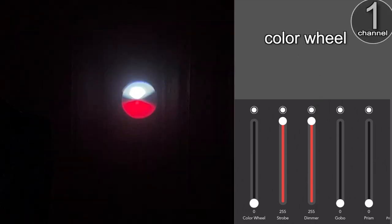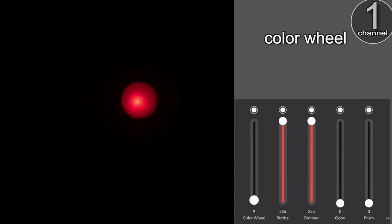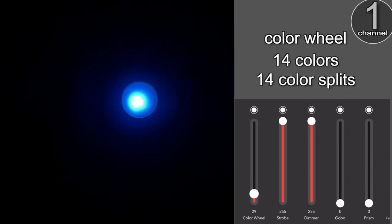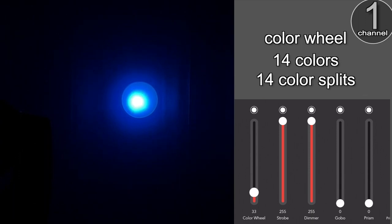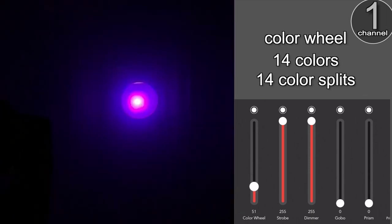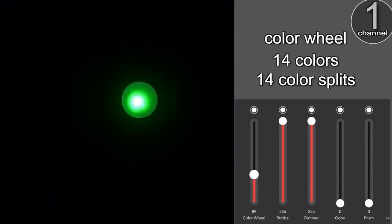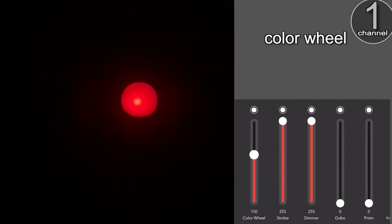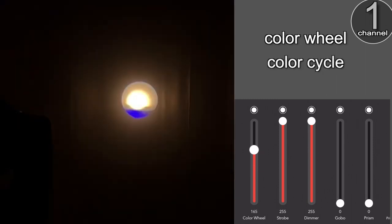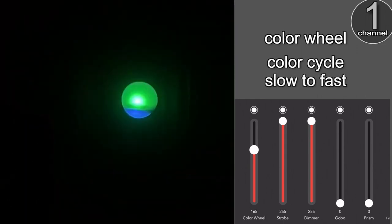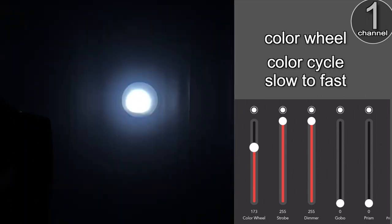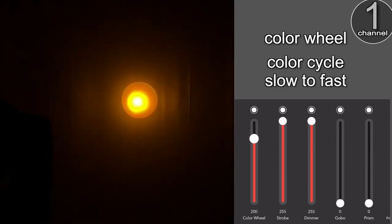Channel 1 controls the color wheel. And here you can select 14 different colors in addition to split combinations of those colors, depending on the value that you send. And in the higher values, you can cycle through those colors from slow at the lower values to really fast at the higher values.